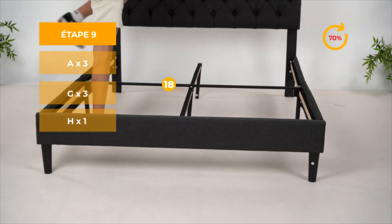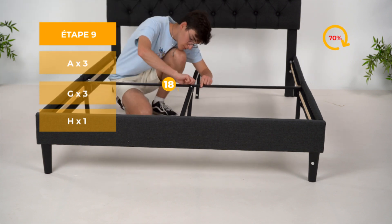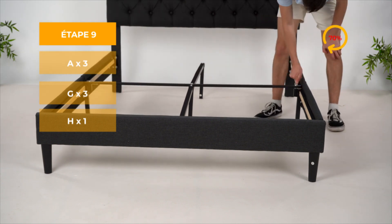Ensuite, placez la pièce 18 au milieu du lit dans l'espace indiqué, puis vissez à 70%.